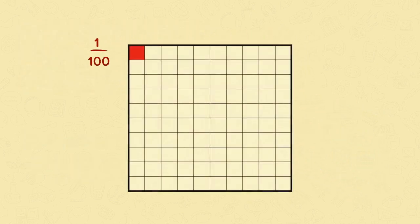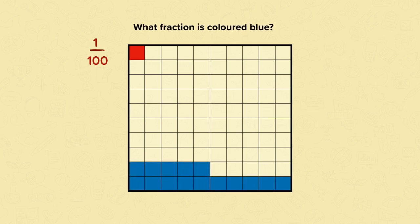Let's have a look at this square. It's been divided into 100 smaller squares, so just one square is one hundredth — one out of a hundred. Now see if you can work out what fraction is colored blue. Pause the video and have a go. Well done if you worked out that the fraction of this square that's colored blue is fifteen hundredths.